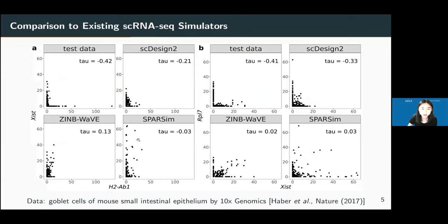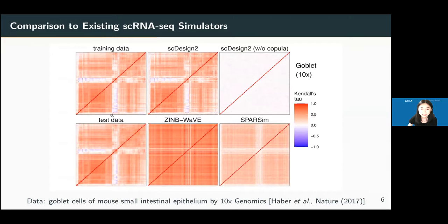Here is a more concrete illustration of some gene pairs. Between two gene pairs, the real correlation is very negative, but ZINB-wave and sparsene do not capture that, while SC Design 2 synthetic data captures negative correlations well. Looking at the gene correlation matrices, the real data and SC Design 2 synthetic data are very similar, but the sparsene result is not. Without copula, the method cannot do the job.